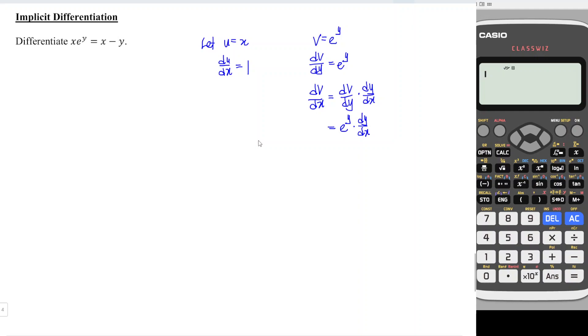For any product rule we just need to remember we need u(dv/dx) plus v(du/dx), which means that the left hand side we should have...